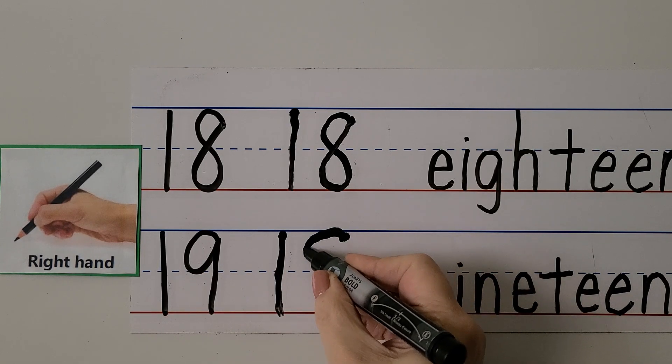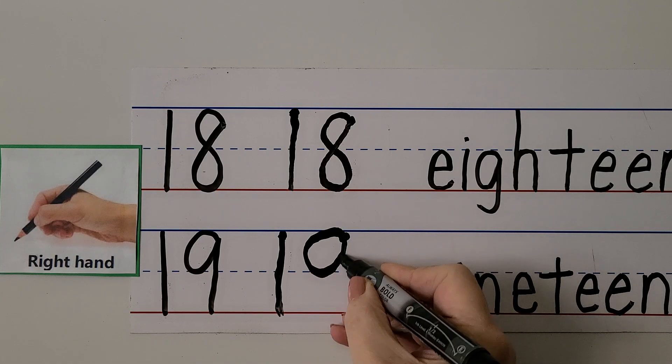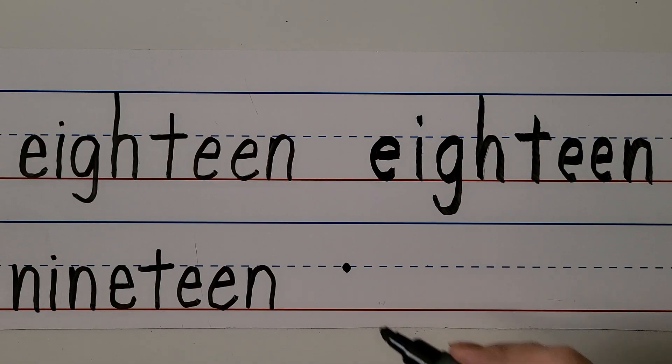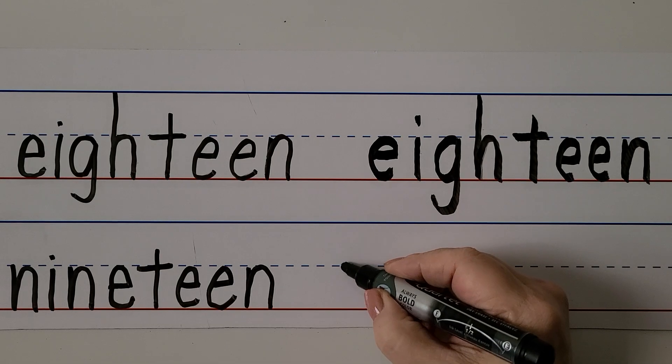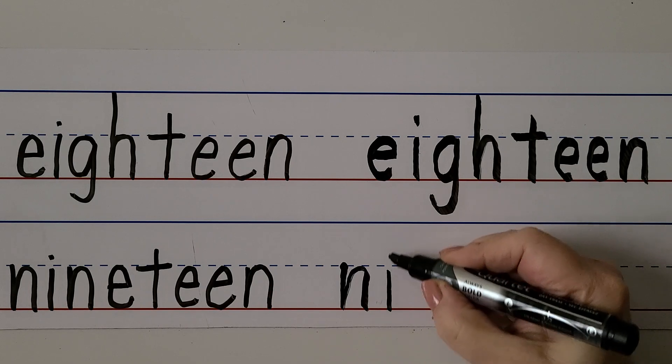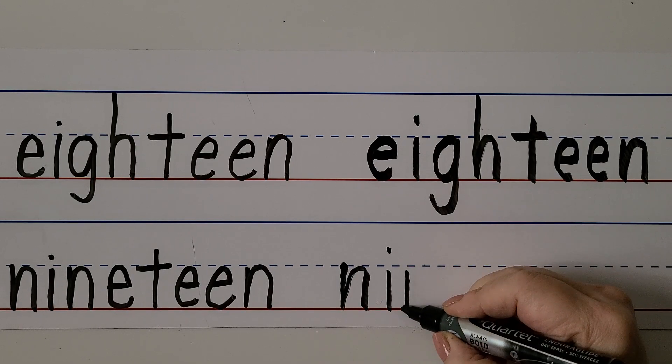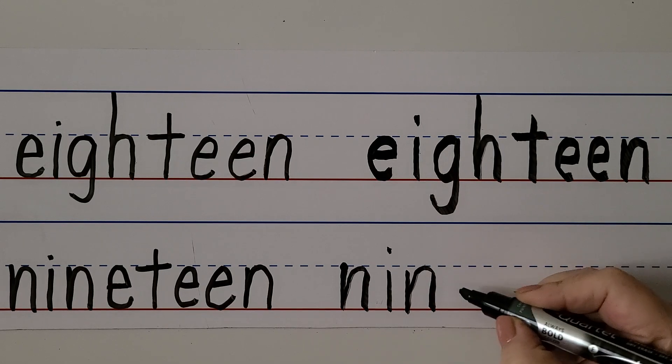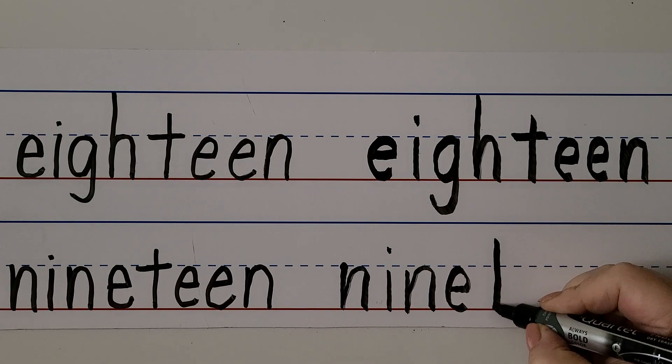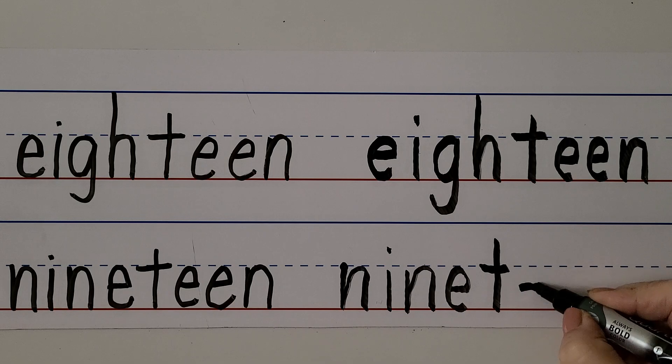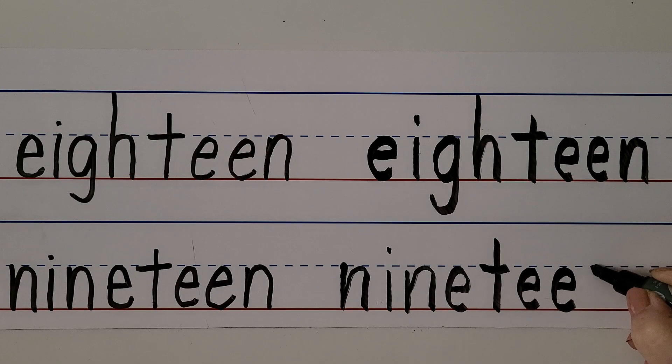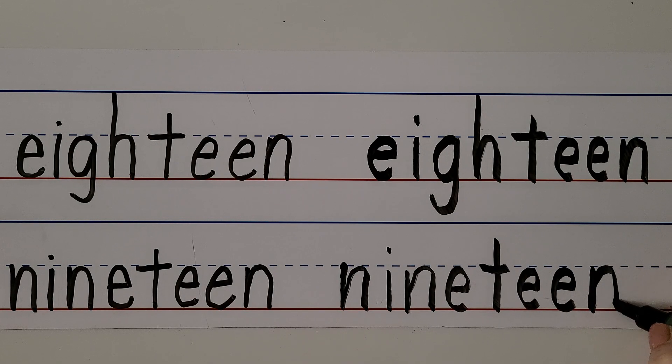We can write the word 19. We start with an N right here: I, N, E, T, E, E, N. 19.